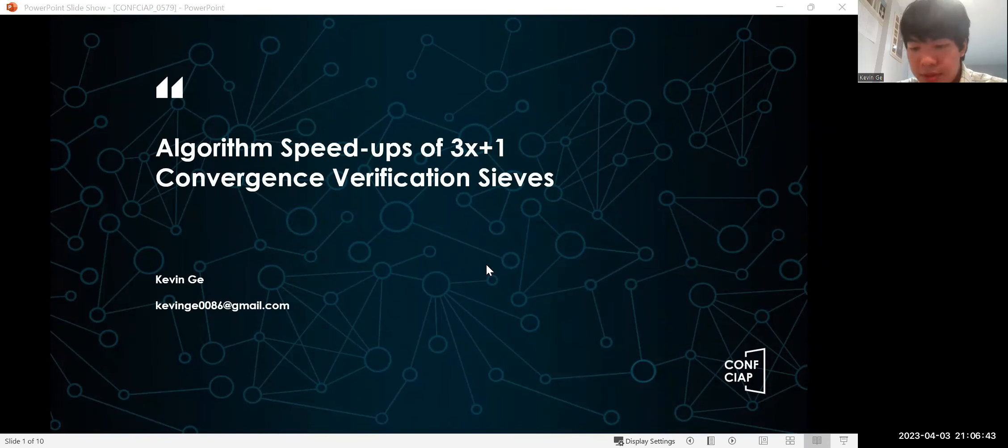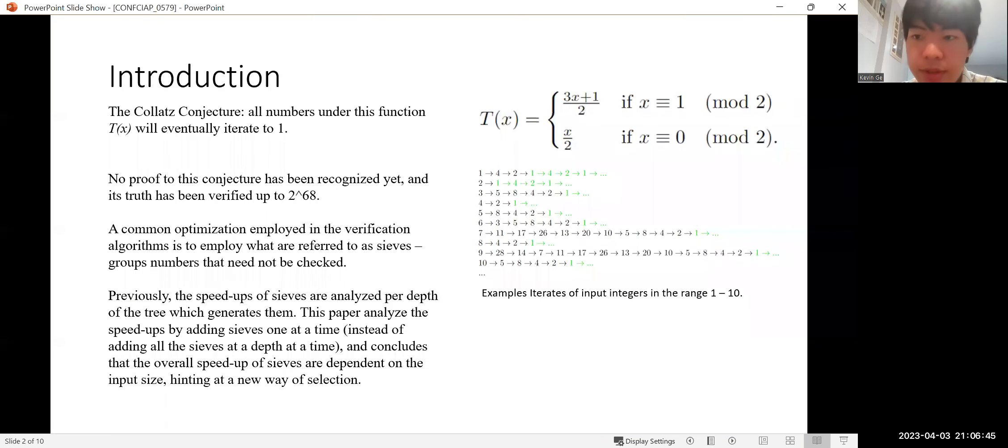So let me start by introducing the conjecture that the algorithm we study is testing. The Collatz conjecture states that for this given function shown on the screen T(x), if we repeatedly apply it to any natural number input, the result will eventually converge down to 1. I should also include some examples on the screen, namely from the inputs ranging from 1 to 10.